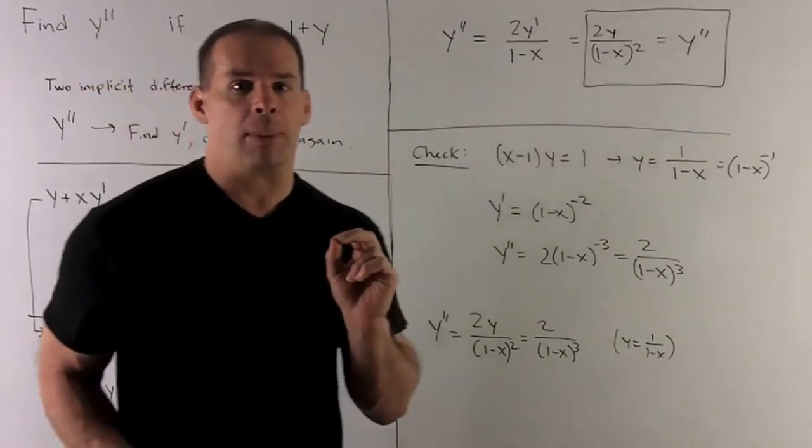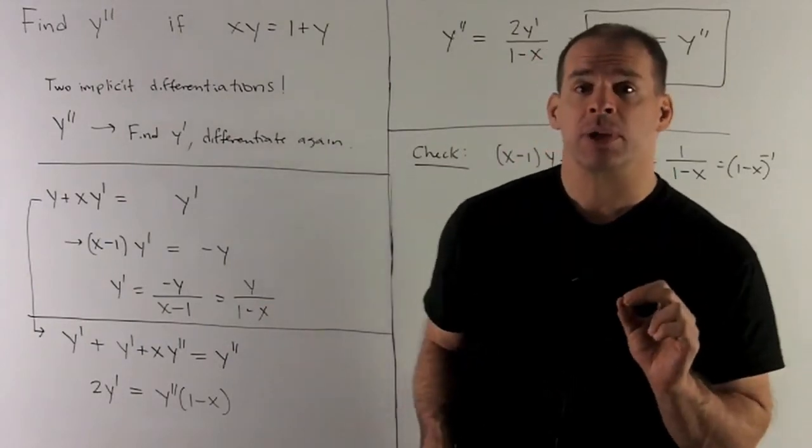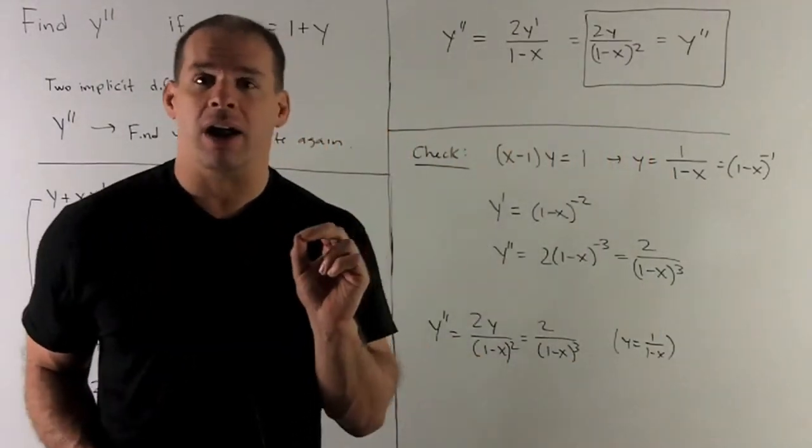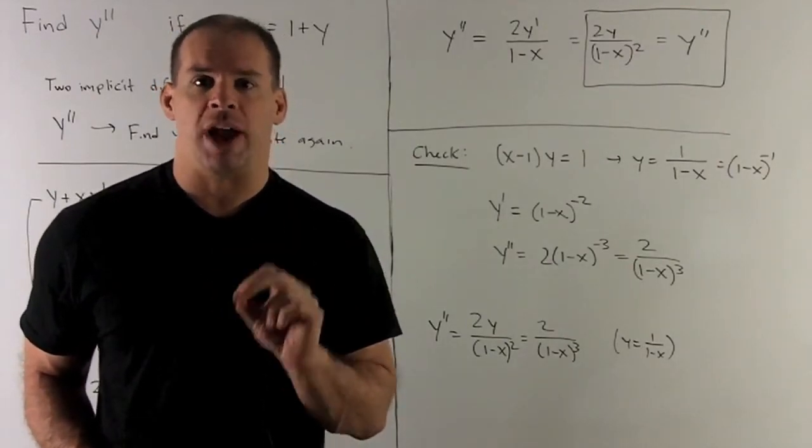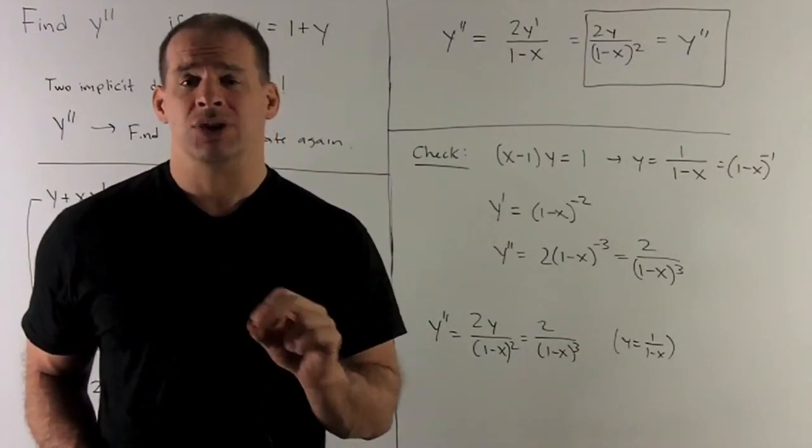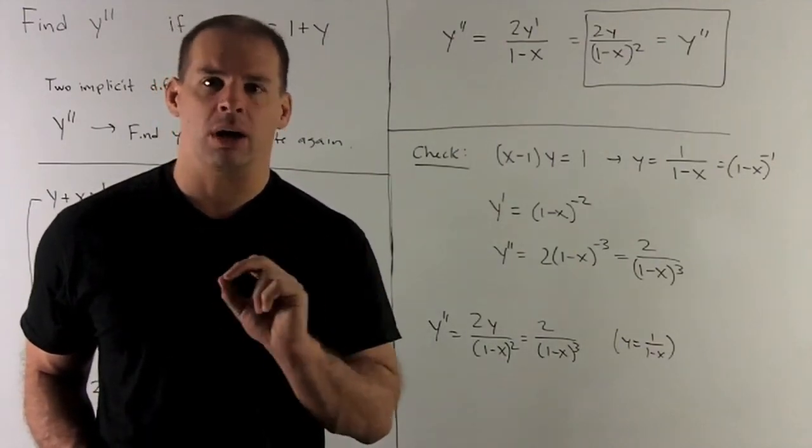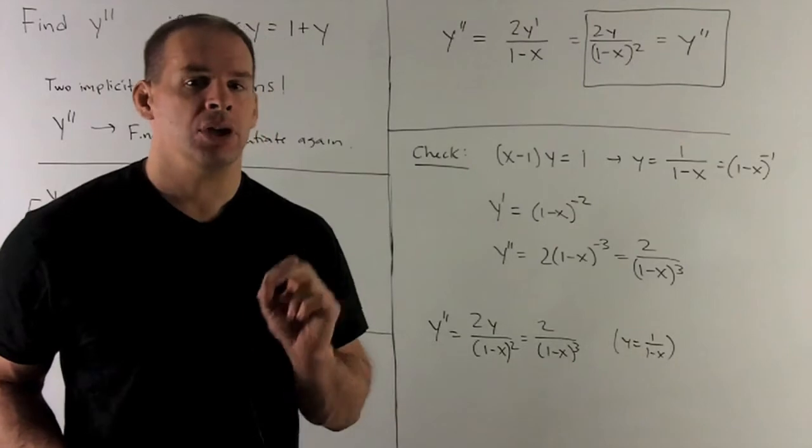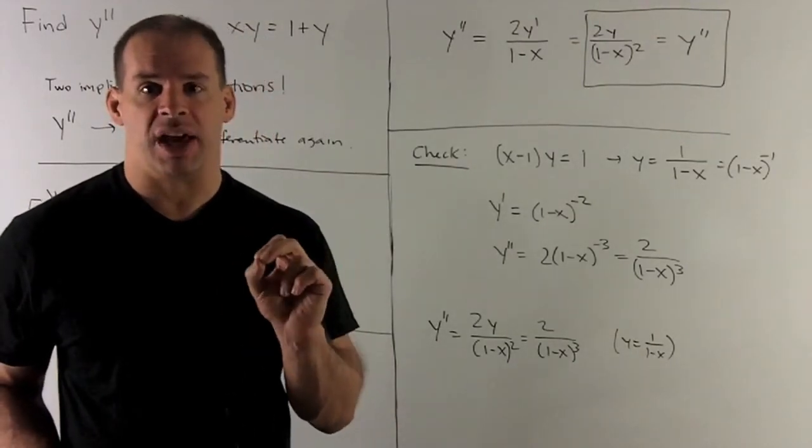Now note that y prime is equal to y over 1 minus x. So I can get rid of the y prime in there, and that's probably something you'd want to do. Normally with these types of problems, you're given your x and your y to start out with. So you want your final answer in terms of x and y with no y prime in there. So our final answer winds up being 2y over 1 minus x squared.